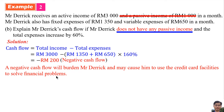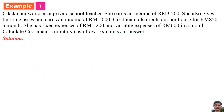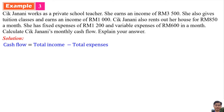In Example Three, Jay Janani works as a private school teacher and earns an income of 3,500 ringgit. She also gives tuition classes and earns an income of 1,000 ringgit. Jay Janani also rents out her house for 850 ringgit a month. She has fixed expenses of 1,200 ringgit and variable expenses of 600 ringgit per month. The cash flow formula is total income minus total expenses: 3,500 ringgit plus 1,000 ringgit plus 850 ringgit.